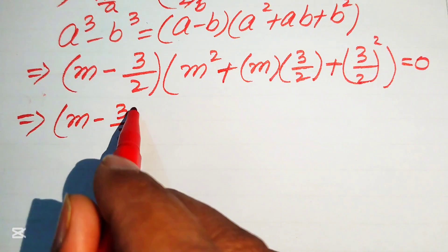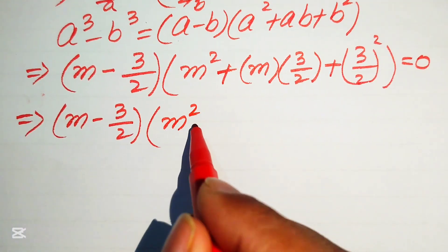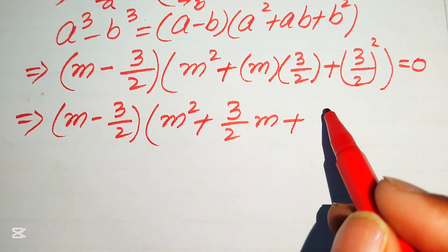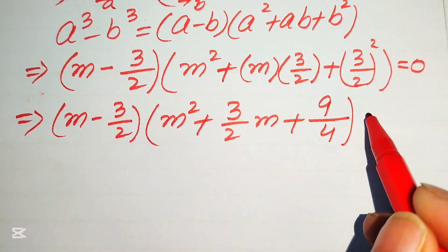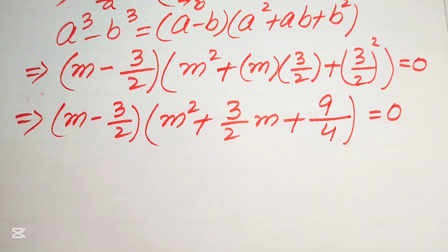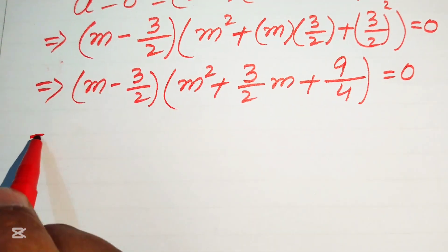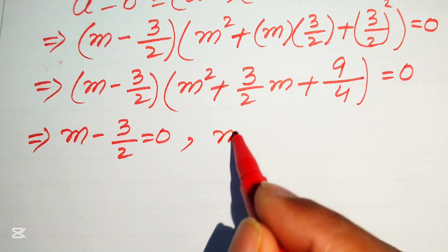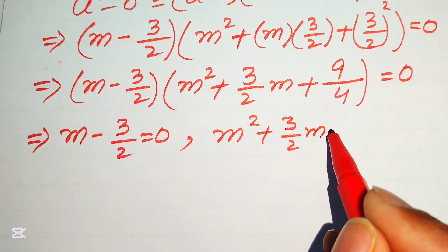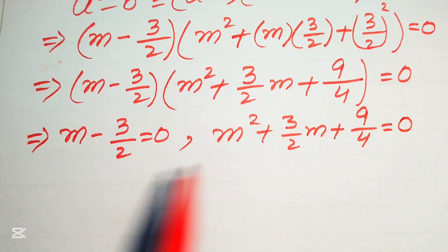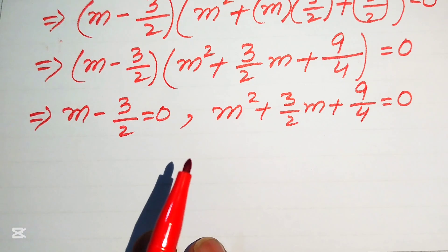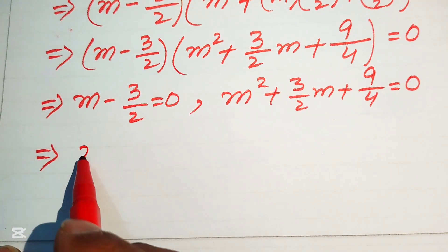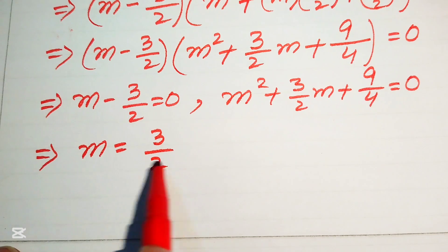Rewriting: (m − 3/2)(m² + (3/2)m + 9/4) = 0. We split into two cases. Case 1: m − 3/2 = 0. Moving −3/2 to the right-hand side gives m = 3/2, which is our first solution.